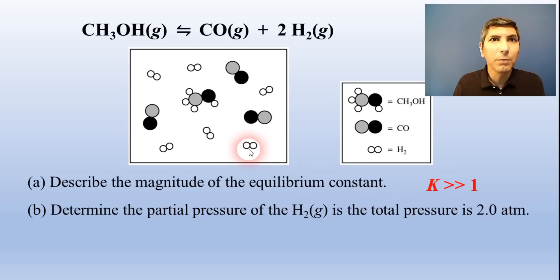And if we're asked to estimate the partial pressure of, say, the hydrogen, we could multiply the mole fraction, which is 6 out of 10, or 6 tenths, by the total pressure. If the total pressure is 2.0 atmospheres, we'd say the partial pressure of hydrogen gas is 1.2 atmospheres.